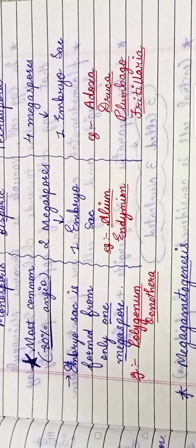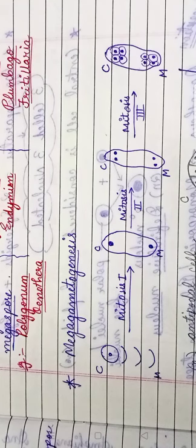Now the megaspore is going to convert into the female gametophyte or embryo sac. The megaspore undergoes mitosis one, giving two nuclei — one toward the chalazal end and one toward the micropylar end. Both nuclei remain at opposite ends of the embryo sac. This mitosis one condition is again carried forward: mitosis two occurs, the two nuclei divide further to give four nuclei.